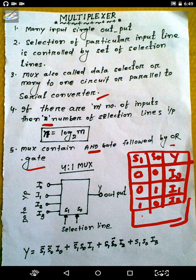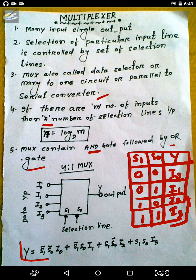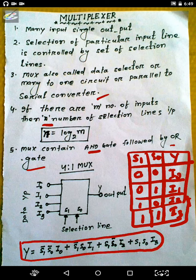When both selection lines are high, that is 1 and 1, MUX selects I3 as the output. The Boolean equation for this truth table is: Y = S1̄ S0̄ I0 + S1̄ S0 I1 + S1 S0̄ I2 + S1 S0 I3.